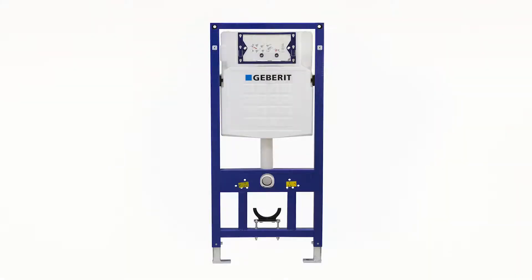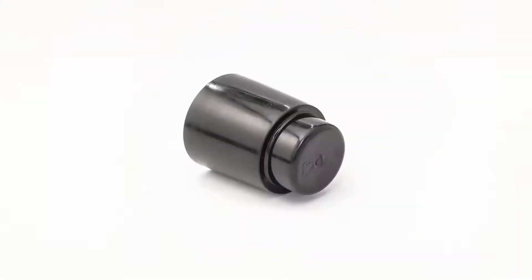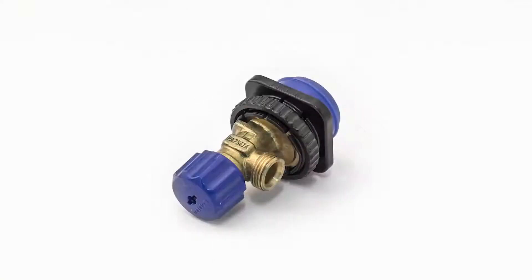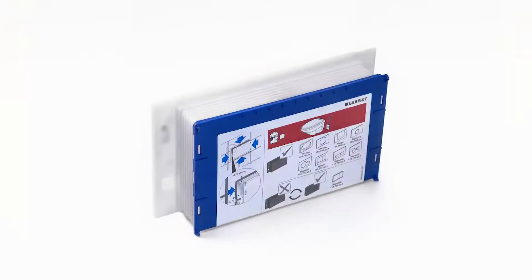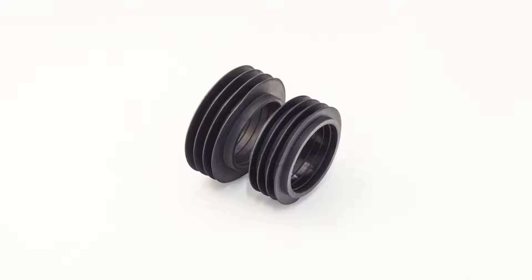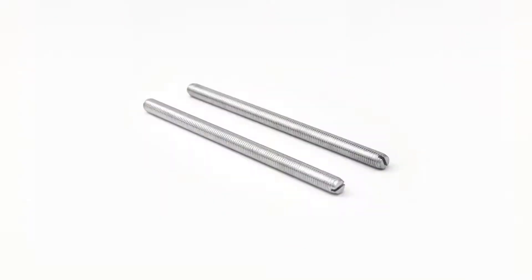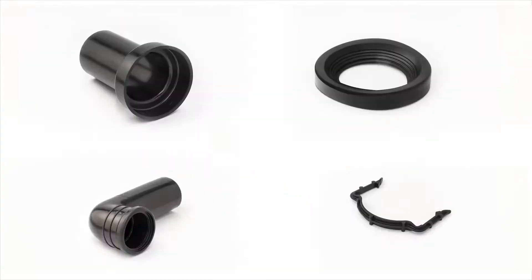In the cistern carton you'll find the Sigma 8 cistern with duo fix frame, dust cap and pipe, water supply connection, installation duct, key seals, fastening kit, pan fixing rods, drainage connection set.